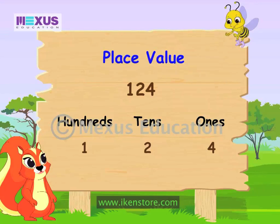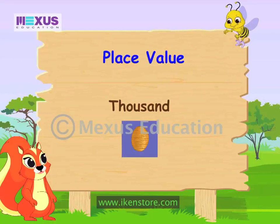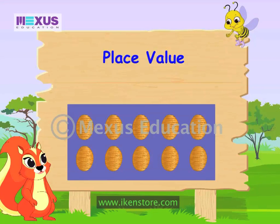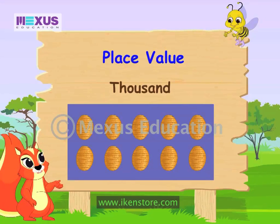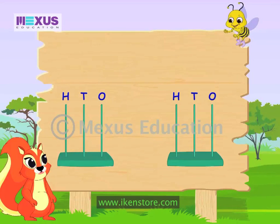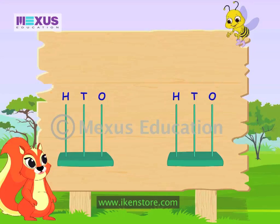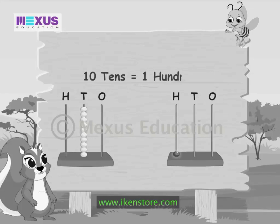Now let me teach you what is a thousand. Suppose there are 100 bees in one beehive. Now if we have 10 such beehives, then we will have 1000 bees. Now I hope you understand how much is 1000. Oh yes, it's a huge number. Yes, let's first learn the numbers below 1000. Let's see the basic relation between the place values. The relation between 1's and 10's: 10 1's make 1 ten. And 10 tens make 1 hundred.